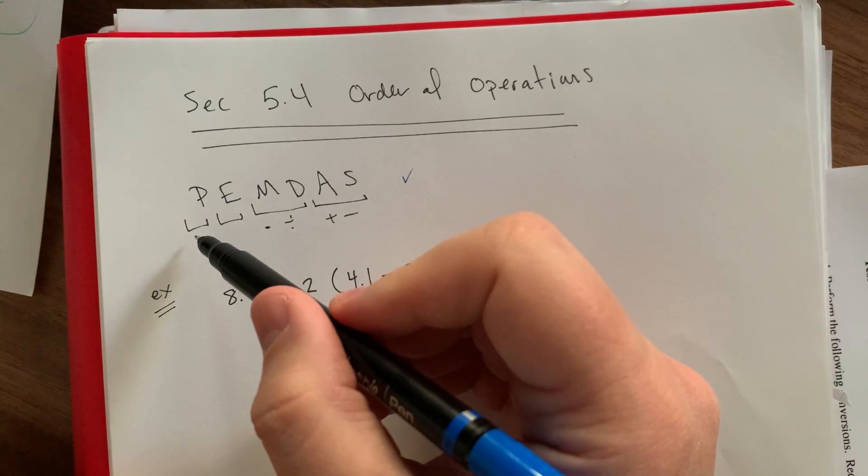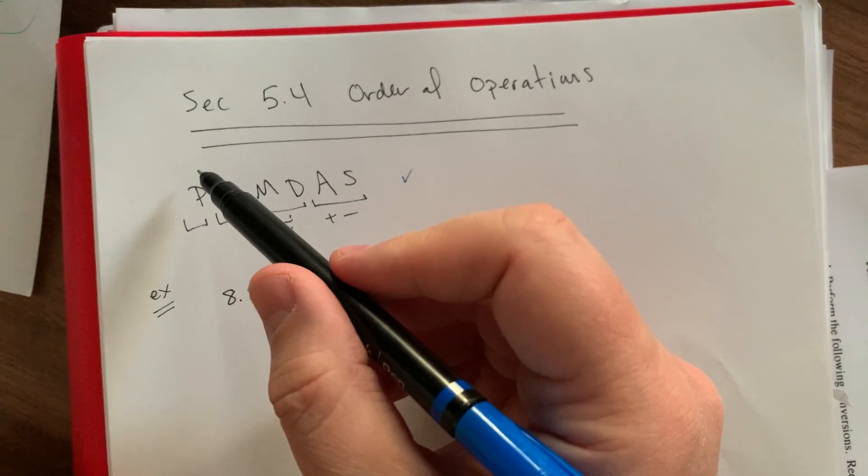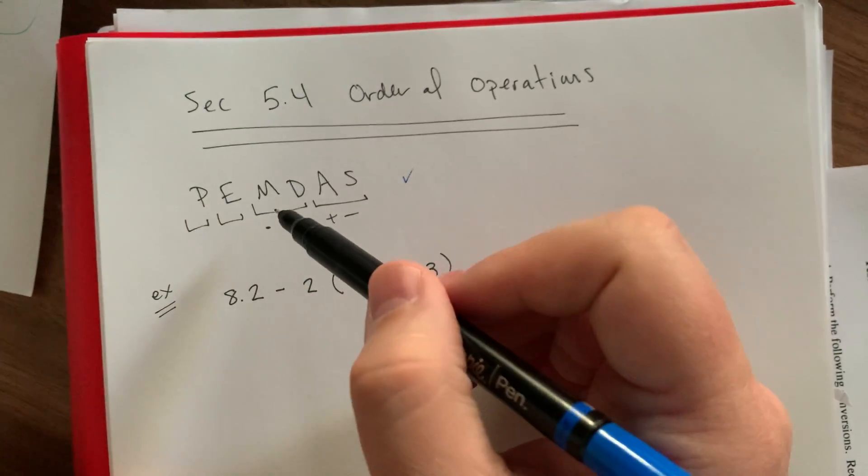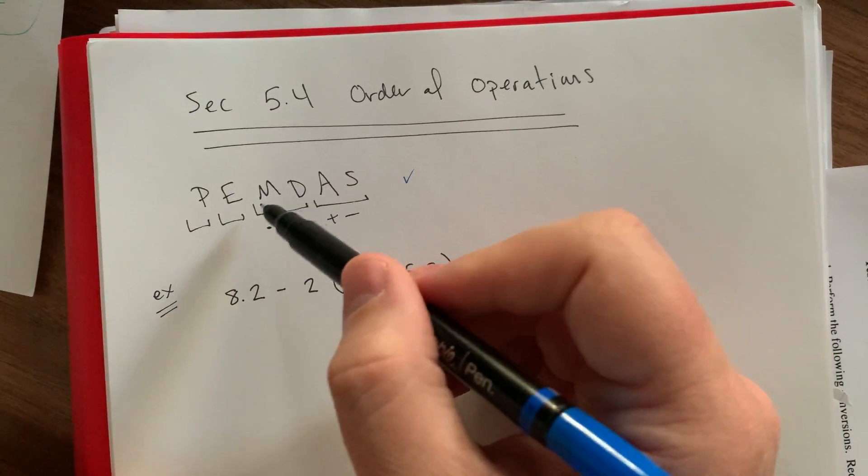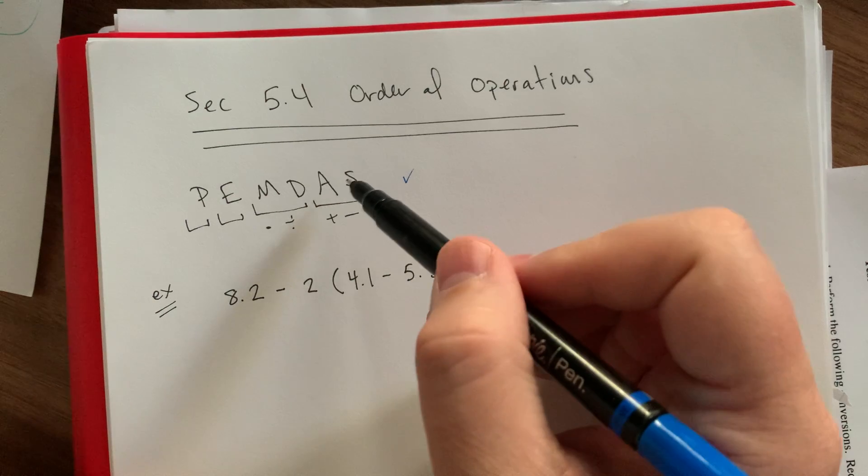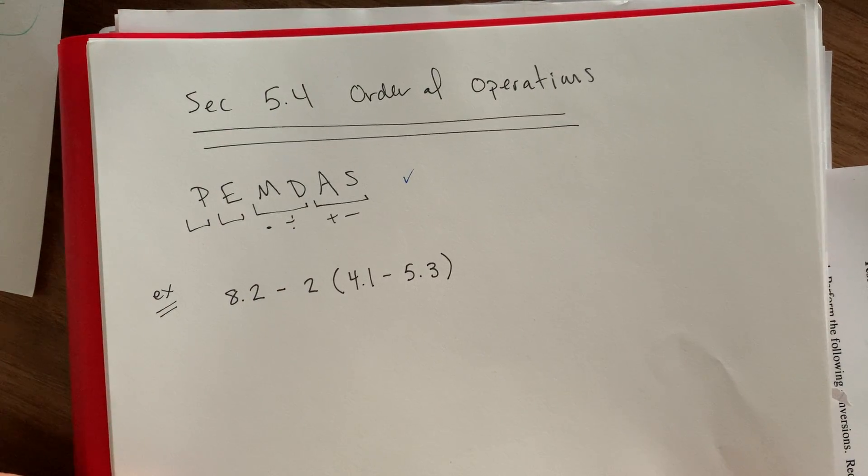Any sort of parentheses, grouping stuff first, then any sort of exponents, powers, or roots. Multiplication, division, on the same level. Addition, subtraction, sort of finish up again, on the same level.